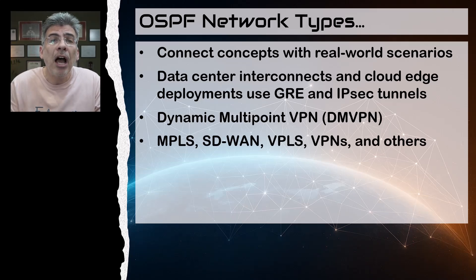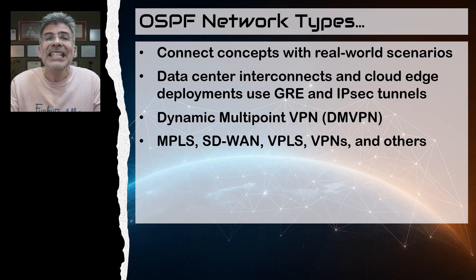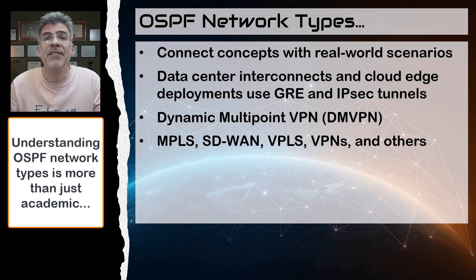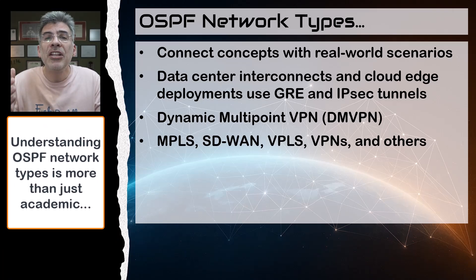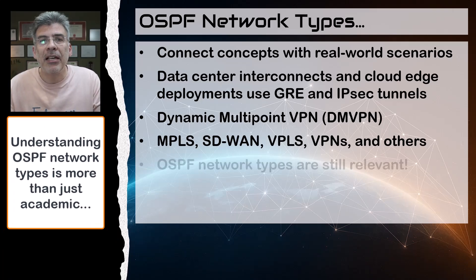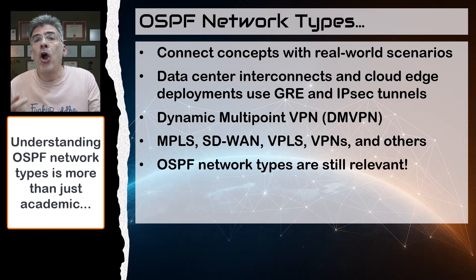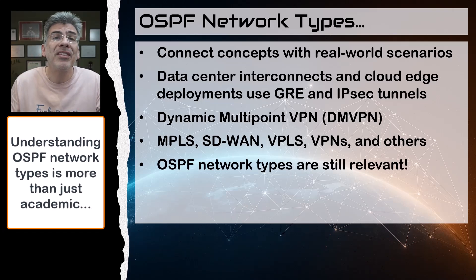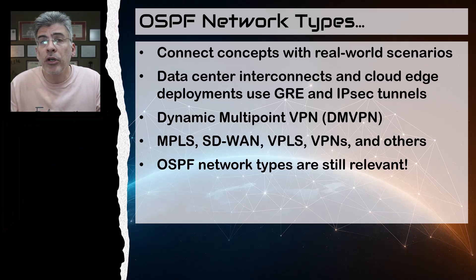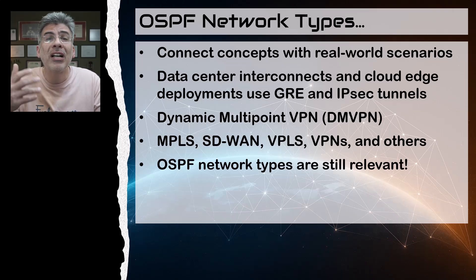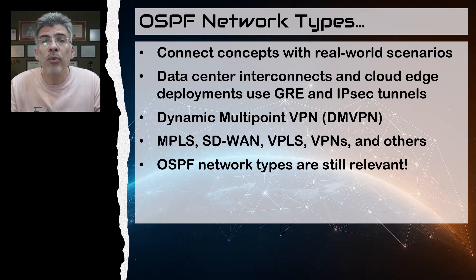Other widely used mechanisms such as MPLS, SD-WAN, VPLS, VPNs, and many other underlying transport technologies still rely on these network types to get OSPF to work. Understanding OSPF network types is more than just academic — they're vital for adapting the OSPF routing protocol to the nuances of the transport medium. Whether you're working with MPLS VPNs, SD-WAN overlays, or cloud hybrid links, choosing the right network type ensures proper neighbor formation, optimized convergence, and a resilient OSPF design.